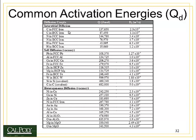Carbon actually moves faster in BCC iron than it does in FCC iron. That's because the atomic packing factor of FCC iron is much higher than in BCC iron — atoms are packed more tightly, so carbon has a more difficult time moving from one interstitial site to another. Carbon and nitrogen have about the same activation energies because they are about the same size atoms. But hydrogen is a much smaller atom, and its activation energies for moving through iron are much lower — about one-third to one-fifth of the values for carbon and nitrogen.